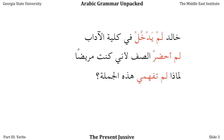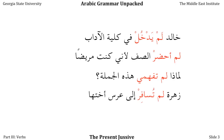We can ask: لماذا لم تفهمي هذه الجملة؟ — 'Why didn't you understand this sentence?' Here we have the long vowel ي at the end of تفهمي, which means we're speaking to a woman. In the muḍāriʿ marfūʿ this would be تفهمين, but in the manṣūb and the majzūm, it's just the long vowel ي. We can also say: زهرة لم تسافر إلى عرس أختها — 'Zahra did not travel to her sister's wedding.' Again, the sukūn over the rāʾ marks it as the muḍāriʿ majzūm.